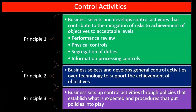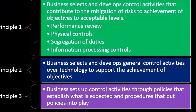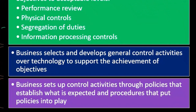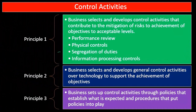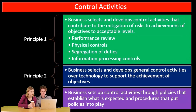Principle number three: the business sets up control activities through policies that establish what is expected, and procedures that put those policies into play. Once we implement this information, we actually put into play the policies and procedures. We're at the part of the control system where we have to implement and put those controls into place, which involves setting up and implementing those policies and procedures.